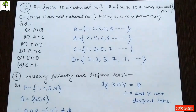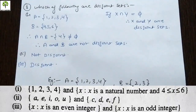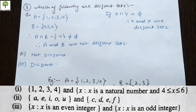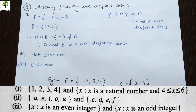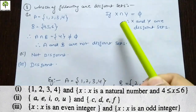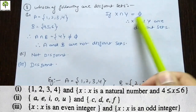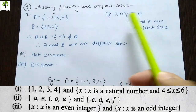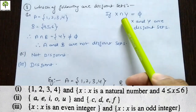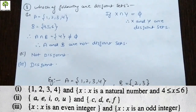In question number 8, we need to find which of the following are disjoint sets. First of all we need to know what disjoint sets are. Disjoint sets means two sets between which there is no connection at all — no intersection. We can define it: if X intersection Y equals the empty set, meaning there are no common elements between both sets, then we call them disjoint sets.